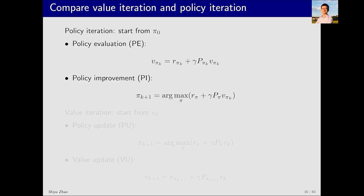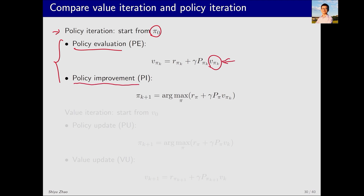First, let's quickly revisit value iteration and policy iteration. Policy iteration starts with an initial policy pi zero, which might be arbitrarily guessed. The k-th iteration includes two steps: policy evaluation, where we solve v_pi_k from the Bellman equation for policy pi_k, and policy improvement, where we solve an optimization problem to get a new policy pi_{k+1} based on v_pi_k, and then iterate further.